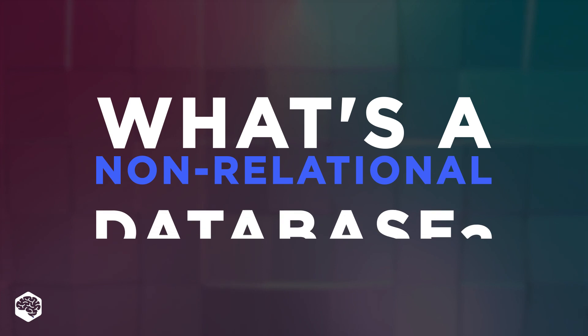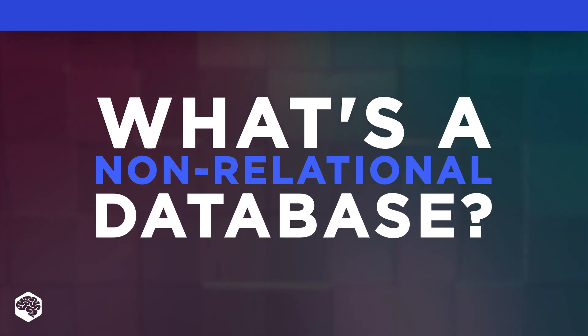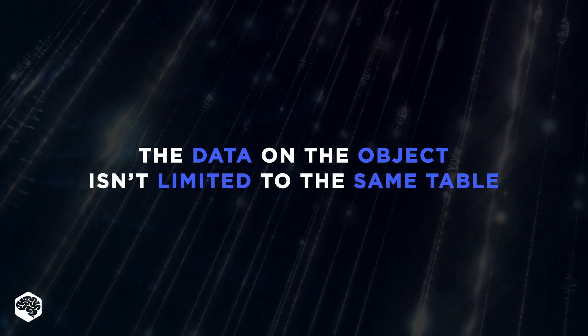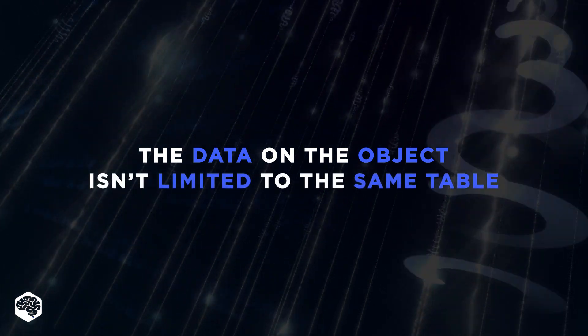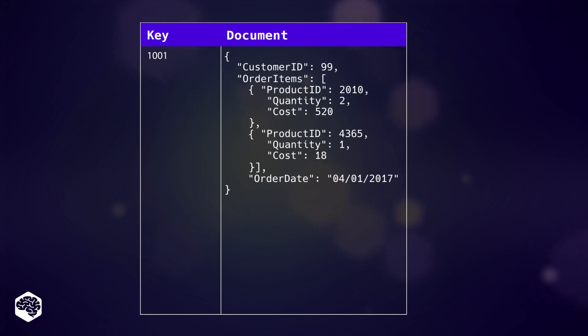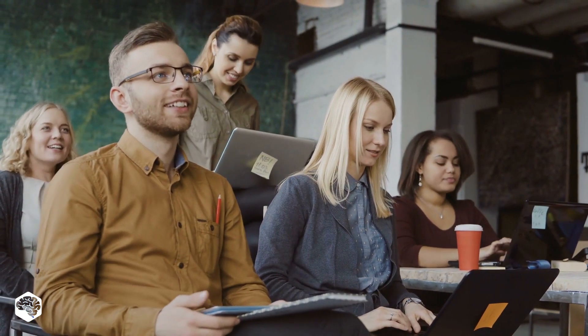What's a non-relational database? NoSQL databases are more flexible because the data on the object isn't limited to the same table. Non-relational databases use columns and rows to enter types of data and its values, and identify objects with keys.